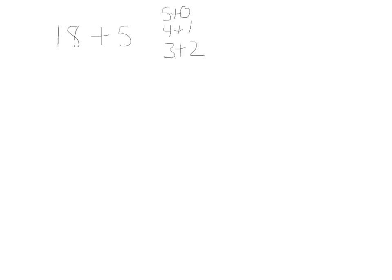So if I'm going to add 5 to 18, 18, 2 more would give me 20. So I'd want to use the combination of 2 plus 3. 18 and 2 more is 20, plus 3 more would give me 23.